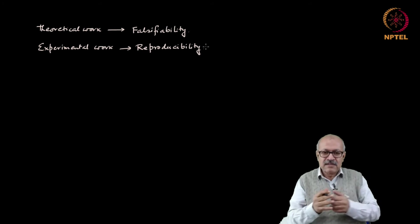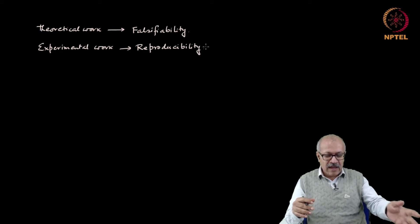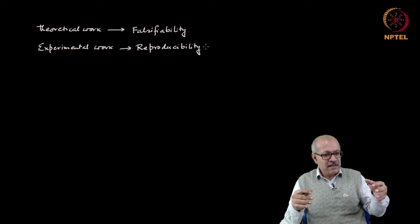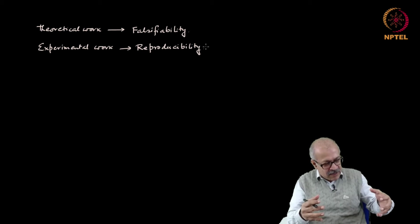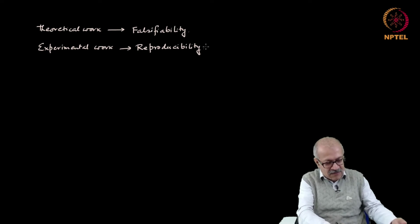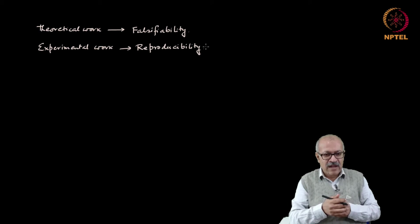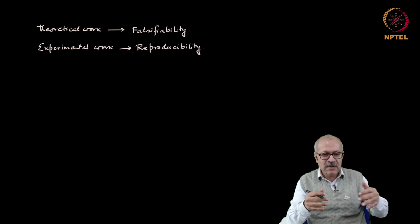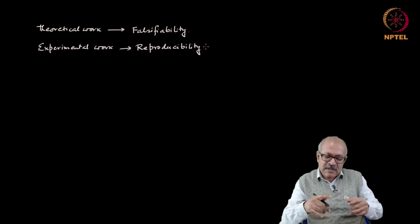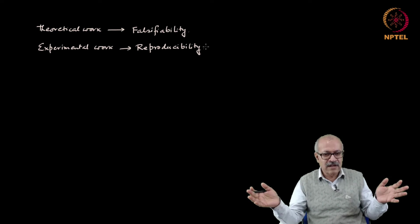The demand is that any experimental result must be reproducible, because the result is coming from the material processes, and therefore the result from the material process should not be different for me and for you. So any experimental result must therefore be reproducible. If it is not reproducible, then it is not a scientific outcome.